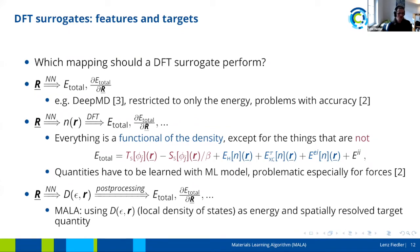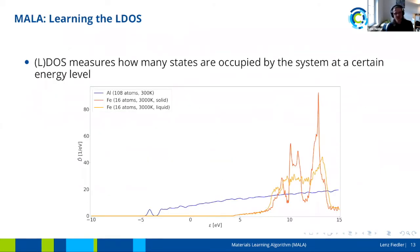This leads to what MALA attempts to do. In MALA, the local density of states (LDOS), D(ε, R), is learned — it is an energy- and spatially-resolved target quantity that can be used in post-processing steps to calculate the total energy, the derivatives of the total energy, and all other quantities that are accessible through the density. The local density of states is the density of states at each point in real space. The density of states, DOS, measures how many states are occupied by the system at a certain energy level.